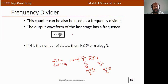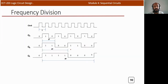In a generalized formula, for the nth stage, the output frequency is f_clock divided by 2^n, where n indicates the stage number. If capital N represents the number of states, then n ≤ 2^N. We can verify this using a waveform example.